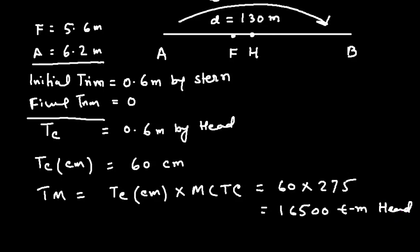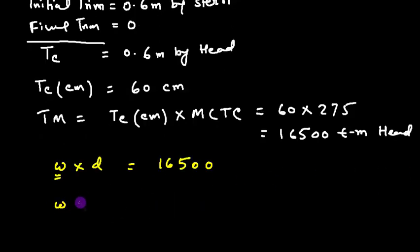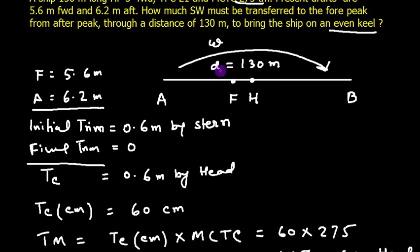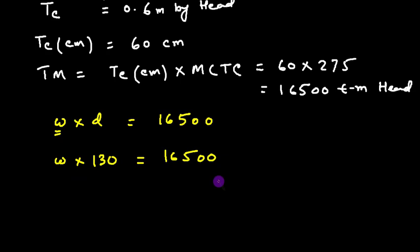Well, we are going to create the same trimming moment, and we should know that this trimming moment is W into D. W into D should be equal to 16,500. We need to find W, so W, and D is given, which is 130. Let's cross-check again—yeah, this distance between the center of fore peak and aft peak is 130. Well, it makes sense because the ship's length is 150 meters.